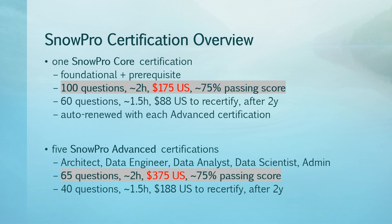We have five Snowpro Advanced certifications: Architect, Data Engineer, Data Analyst, Data Scientist, Administrator — 65 questions each, in around two hours, $375 U.S. The same 75% passing score — it's adjusted.